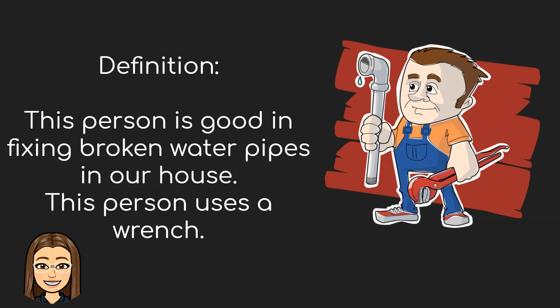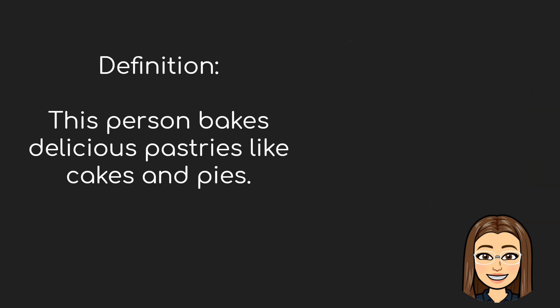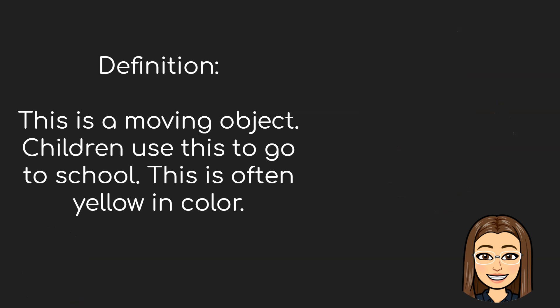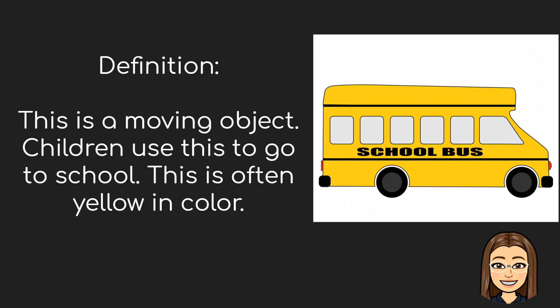Next, let's go to our second example. This person bakes delicious pastries like cakes and pies. What do you call this naming word? If your answer is a baker, then you are correct. Next, this is a moving object. Children use this to go to school. This is often yellow in color. What's your guess? If your answer is a school bus, then you got it right.